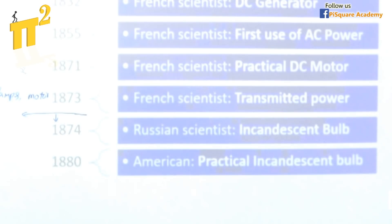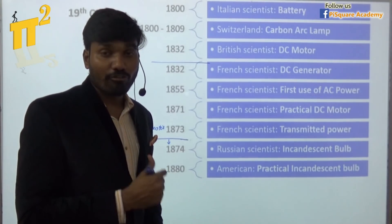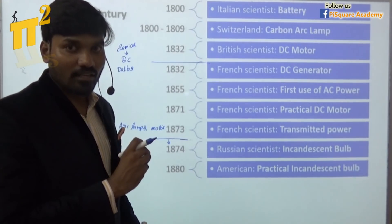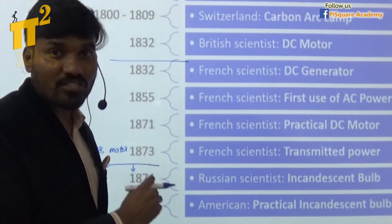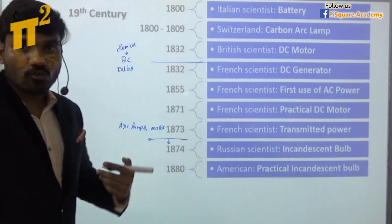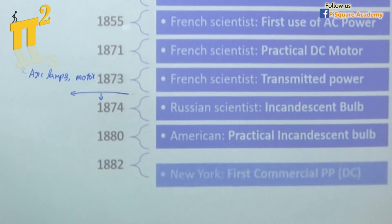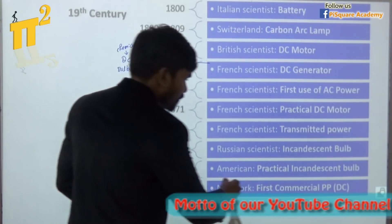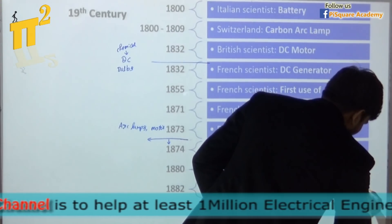In 1880, Thomas Alva Edison — an American scientist — gave a practical incandescent lamp that could last for 1500 hours. This brought significant changes in electricity. Edison was not just an inventor but also a businessman. To let consumers use his inventions, they needed a power source, so he started building power plants. In 1882 in New York City, he launched the first commercial power plant so that people could use his incandescent bulbs. He generated and transmitted DC power at 110 volts, 2-wire.